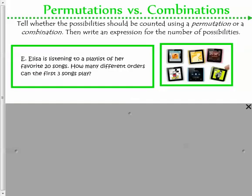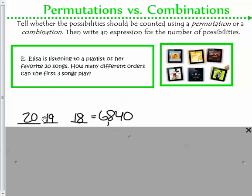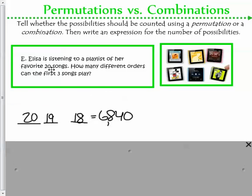Go ahead and see if you can do this one. Pause the video. I'm going to be back in just a second to show you the answer. Okay, so Elise is listening to playlists of her favorite 20 songs. She can pick from the 20 for the first one, 19 for the second, and 18 for the third. Or 6,840 different ways.